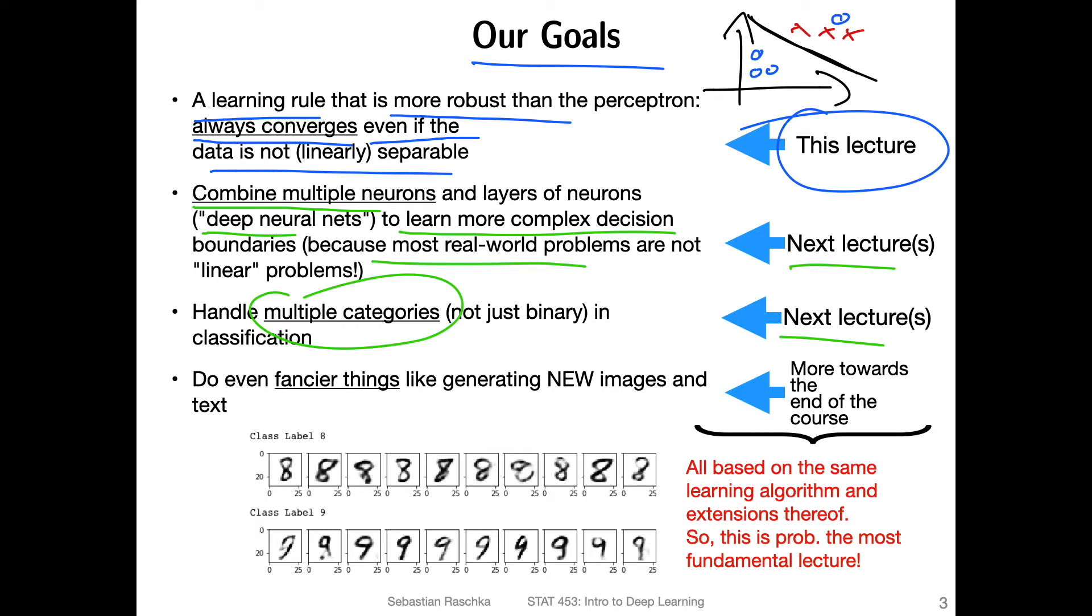So we will learn how we can classify problems where we have more than two classes, which is also important, of course. If you think about building an application for a birdwatcher to classify birds outside, there are more than just two bird species, right? So we will learn about methods that can handle multiple classes.